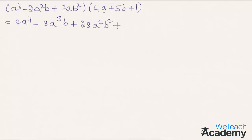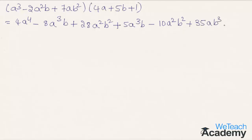Multiplying with 5b, we get 5b into a cubed as 5a cubed b, and 5b into minus 2a squared b as minus 10a squared b squared, and 5b into 7ab squared as 35ab cubed. Multiplying with 1, we get a cubed minus 2a squared b plus 7ab squared.